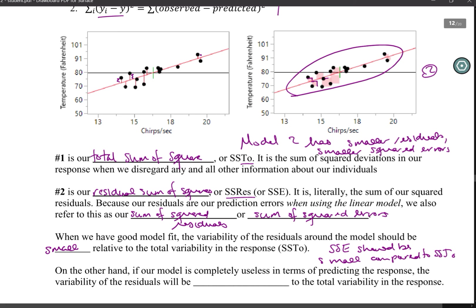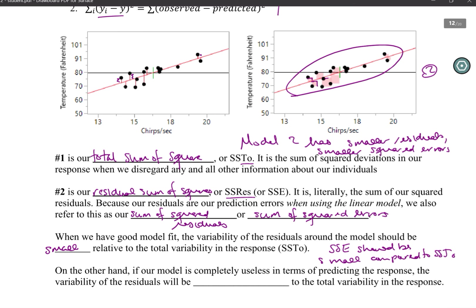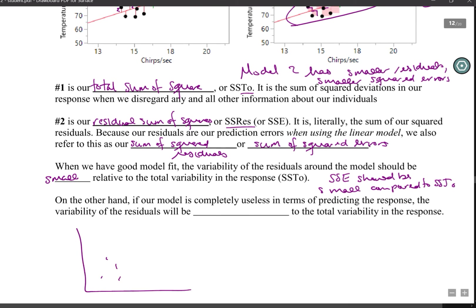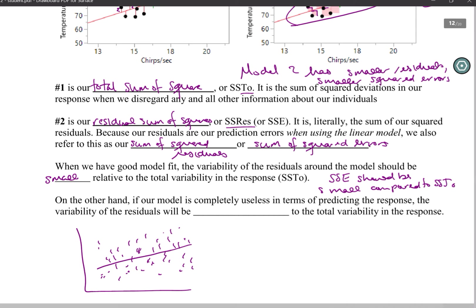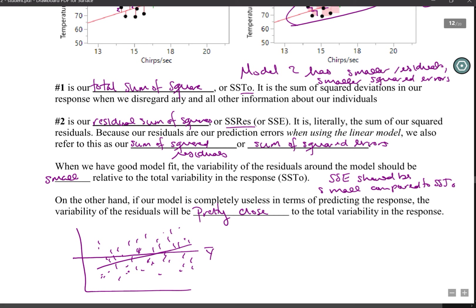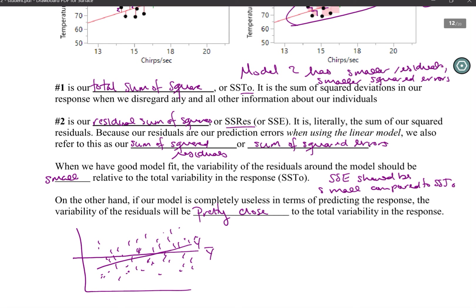If we have bad model fit — if the model is not very useful in predicting the response — the variability of the residuals will be pretty close to the total variability in the response. If I were to draw y-bar and y-hat, we can see that the sum of squared errors relative to the sum of squared total are about the same. The residuals around y-hat are basically the same as the prediction errors around y-bar.